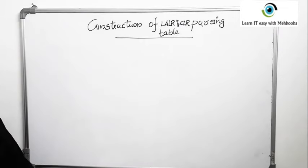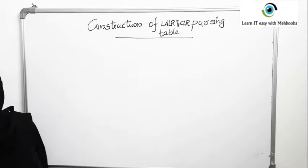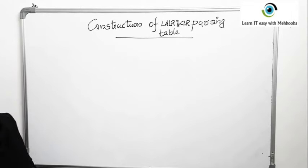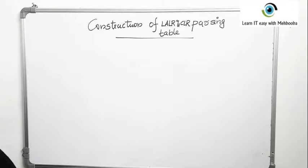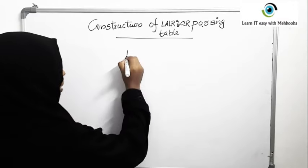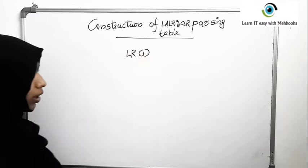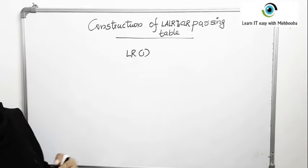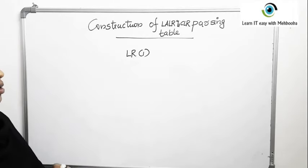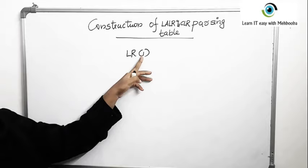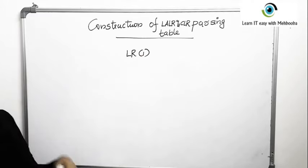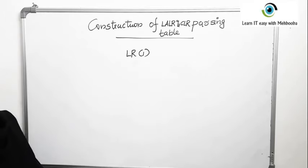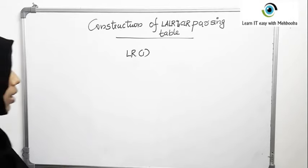In this video we will see the construction of LALR and CLR parsing tables. They are slightly different from the SLR parsing table in the sense that they use canonical collection of LR1 items. LR1 items are LR0 items plus a lookahead. An item is any production with a dot on the right-hand side, but in case of LR1 items we will have one lookahead symbol. In case of LR0 items there were no lookaheads, but in LR1 items there is a lookahead symbol.